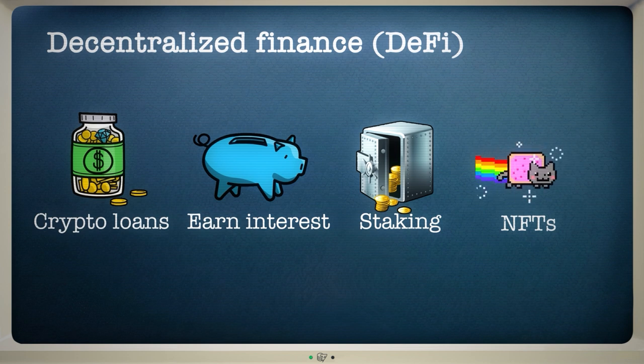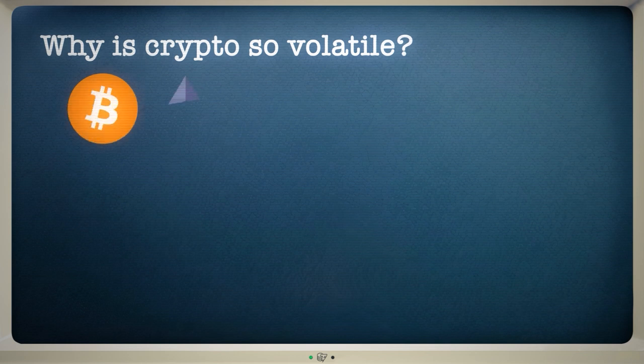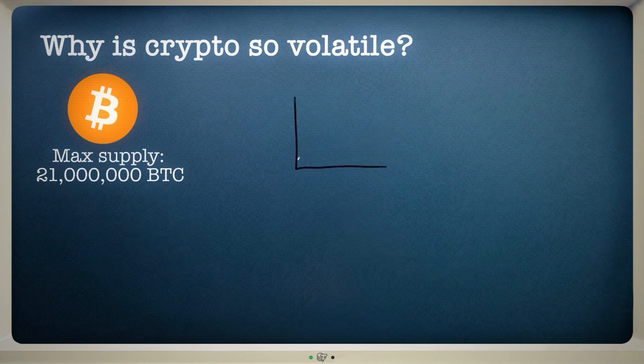If you're new to cryptocurrencies, you might be wondering this. Why are they so volatile? Well, it's partly down to the fact that assets like Bitcoin and Ether are still pretty new. Some cryptocurrencies have a limit on the maximum number of coins that will ever exist, 21 million in Bitcoin's case. This lack of supply means prices can rise when demand is high.